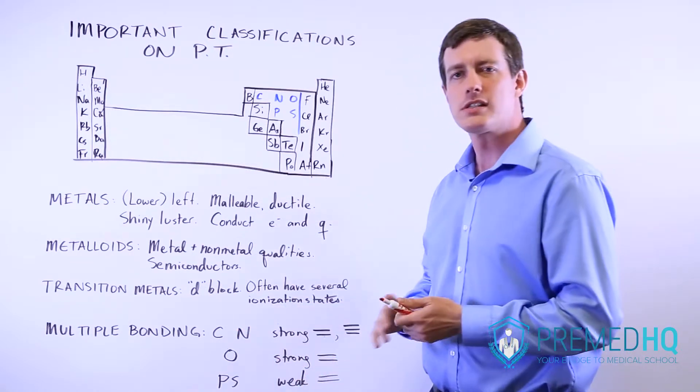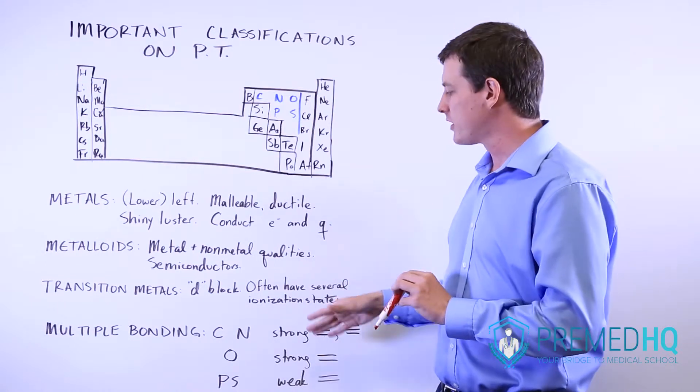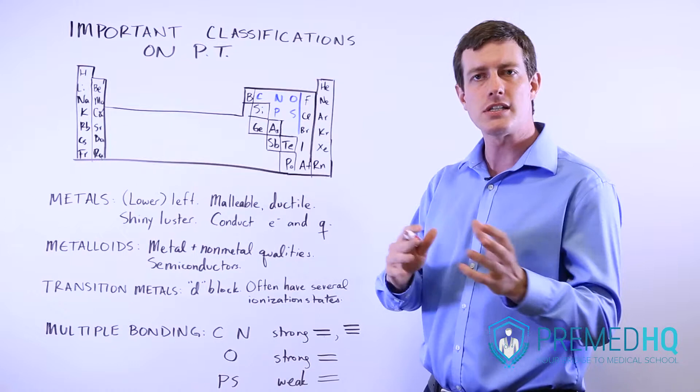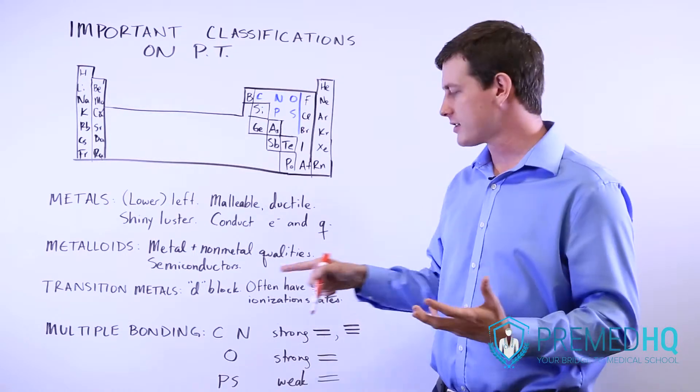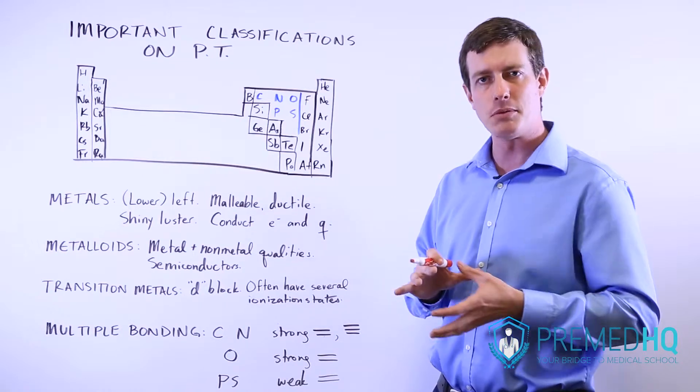Carbon and nitrogen are the ones that can make strong double and triple bonds. Both of those are very good at making that. And your cyanide compound, CN, has a triple bond. And so that's the two of them doing something they do very well, which is making multiple bonds.